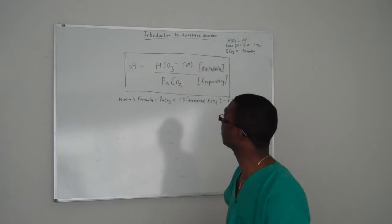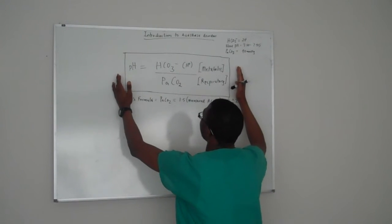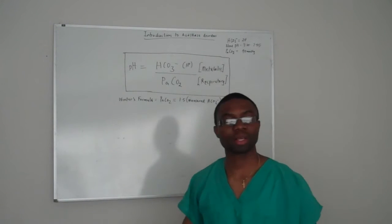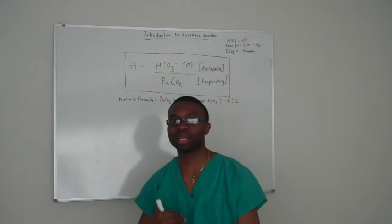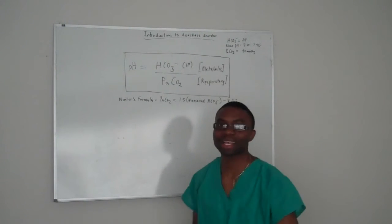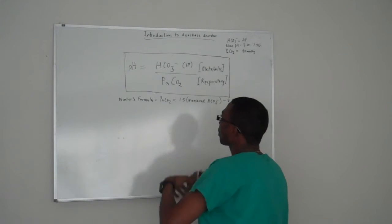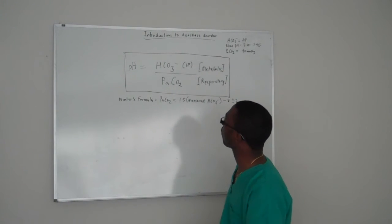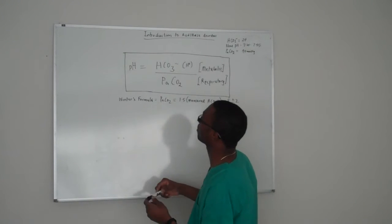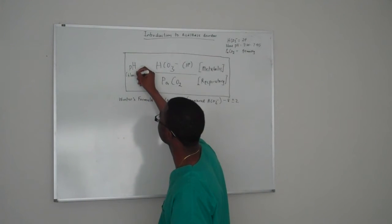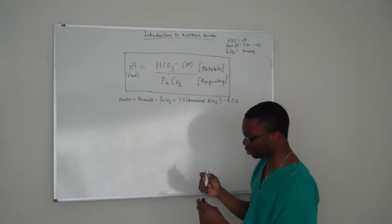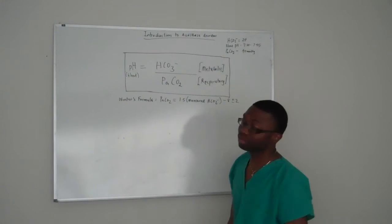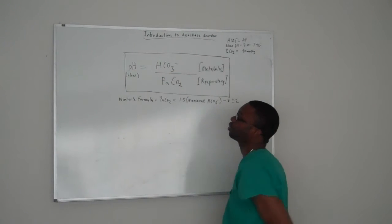The biggest thing is this formula right here. When I say this formula, this is all you have to know. Once you know this formula, it becomes a piece of cake. I promise you, by the time you're done with this lecture you will appreciate this formula because it's a cheat sheet. This is where the bread and butter is. This pH on the left states the pH at which your blood is supposed to be at all times, and on top of the numerator is bicarb.